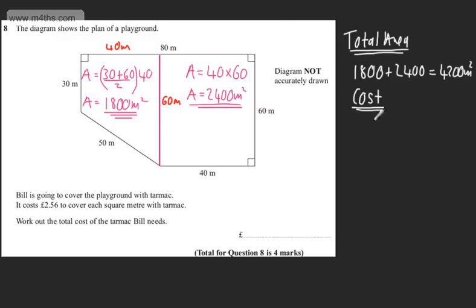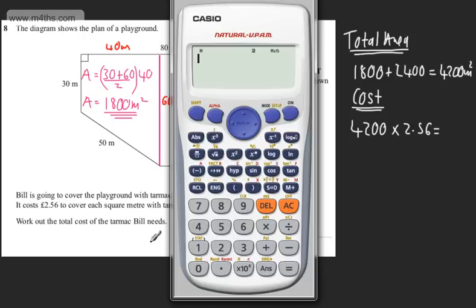So the cost of this is going to be 4,200 multiplied by 2.56. We can put this straight into a calculator. So let's do that.